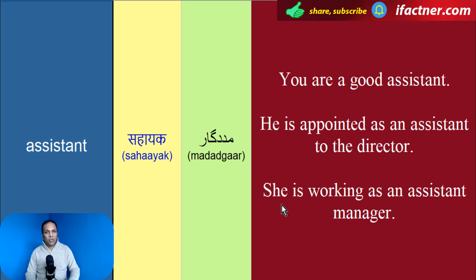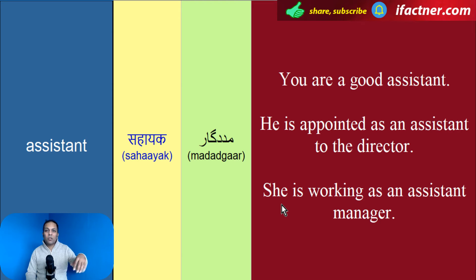Teesra sentence hai: 'She is working as an assistant manager.' Ke woh assistant manager ke toor peh kaam kar rahi hai. Yaani manager ke neechche jo hota hai, jo manager ko assist kerta hai, ya phir chhota manager — usko assistant manager kehtay hain. She is working as an assistant manager.